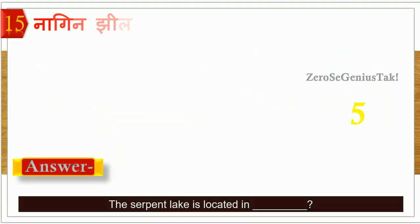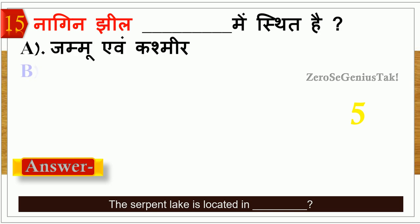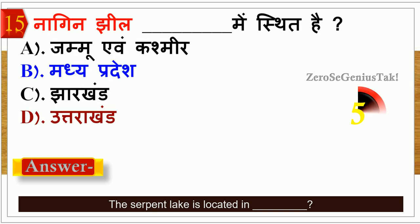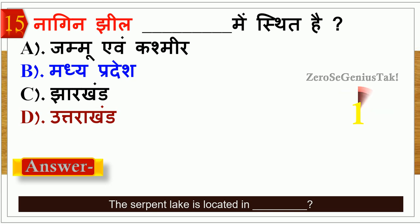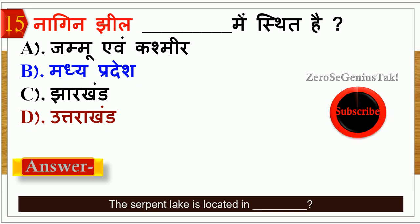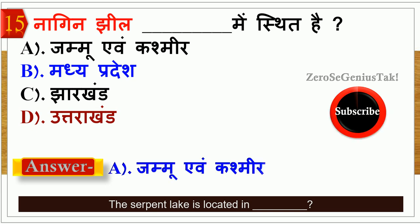The next question: Where is Nagin Lake situated? The correct answer is that Nagin Lake is located in Jammu and Kashmir.